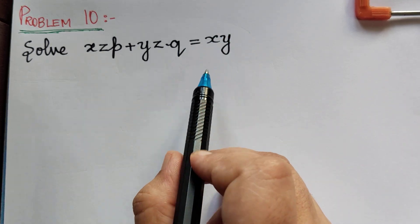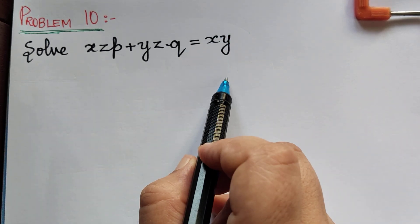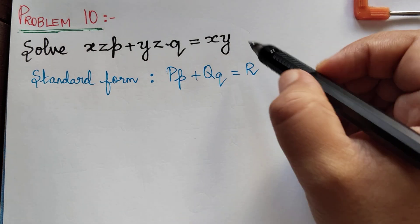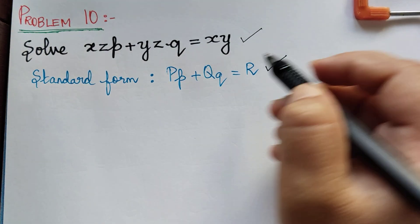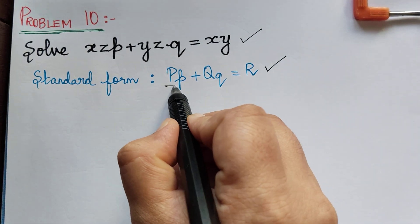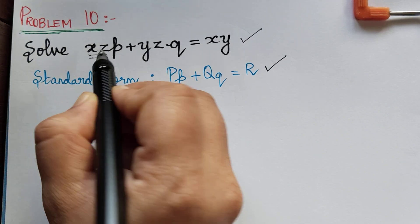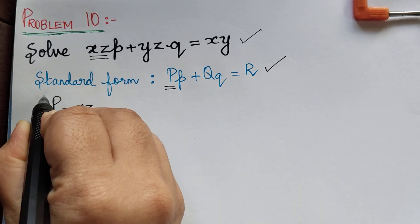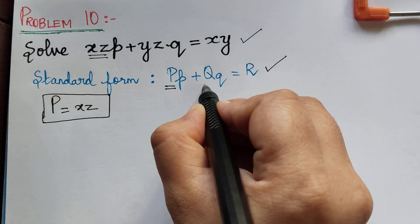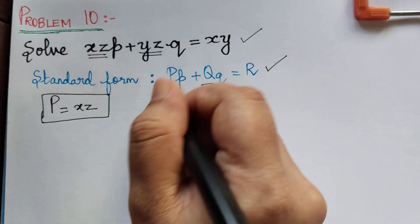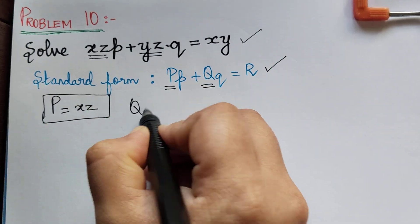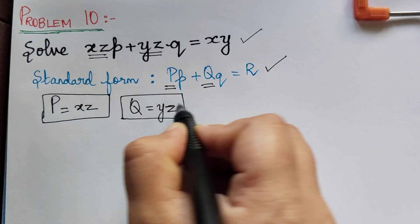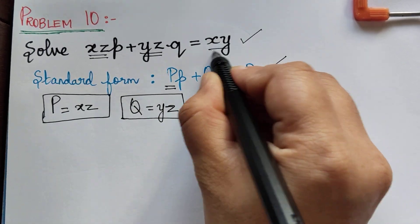Let us write the standard form of the Lagrange's equation first. Now we shall compare these two equations. At the place of capital P, we have xz, so the value of capital P is xz. The value of Q will be yz, and the value of R is equal to xy.